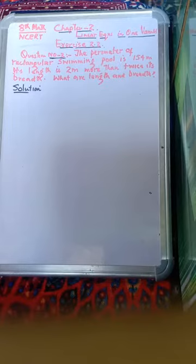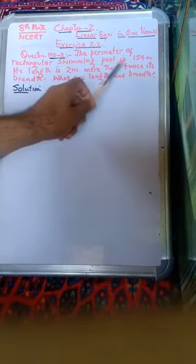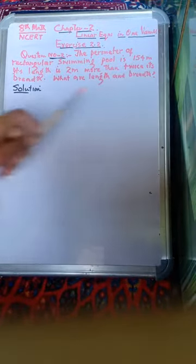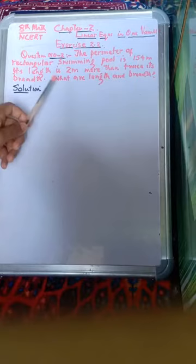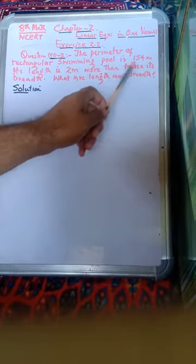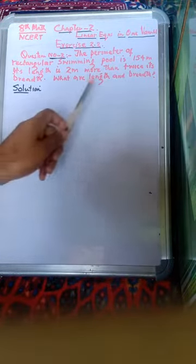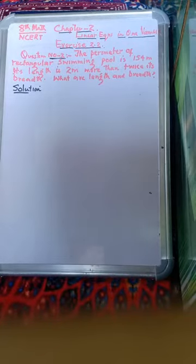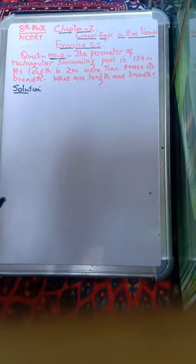Question number 2 is: the perimeter of a rectangular swimming pool is 154 meters. Its length is 2 meters more than twice its breadth. What are the length and breadth of the swimming pool? So here the swimming pool is rectangular.